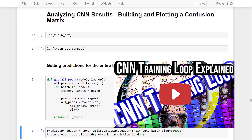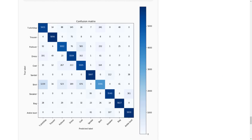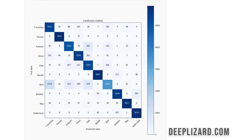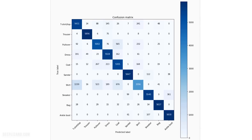Before we jump into the code, I want to take a quick look at what we're trying to achieve — we're trying to build this confusion matrix. It's available on deeplizard.com on the corresponding blog post for this video. The link is in the description. Now this confusion matrix has three axes. On the x-axis, we have the predicted labels. On the y-axis, we have the true labels. And inside the confusion matrix, we have these colors which build a heat map for us. The higher the values, the darker the color.